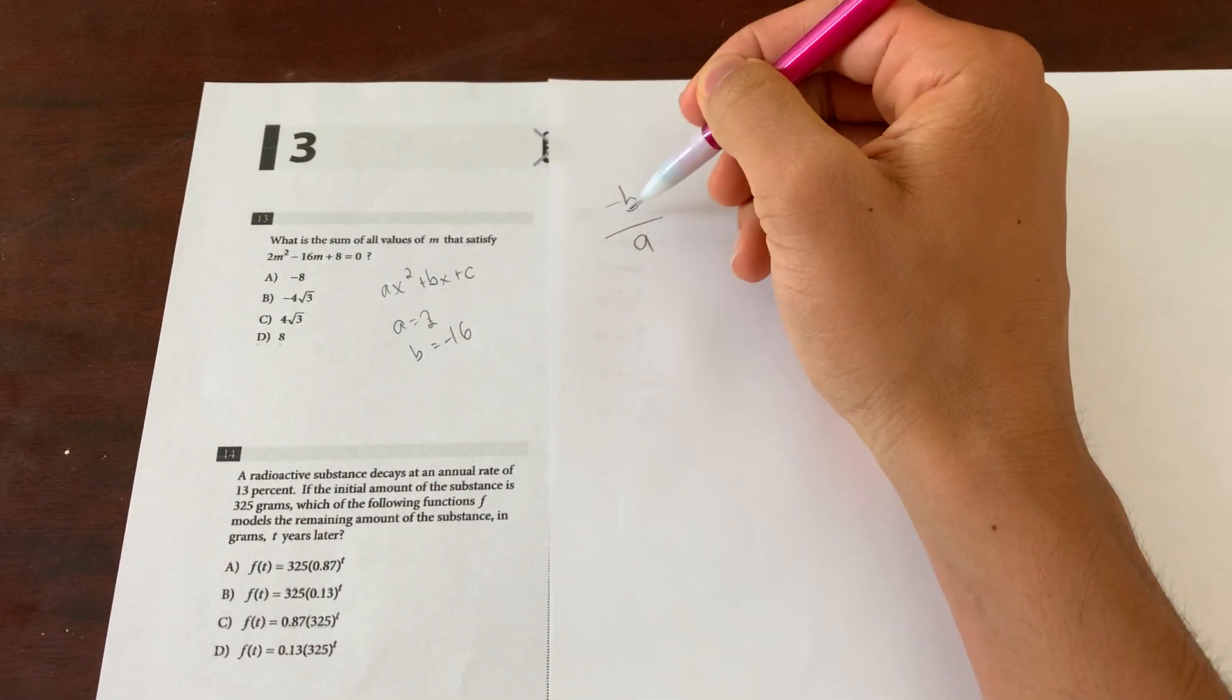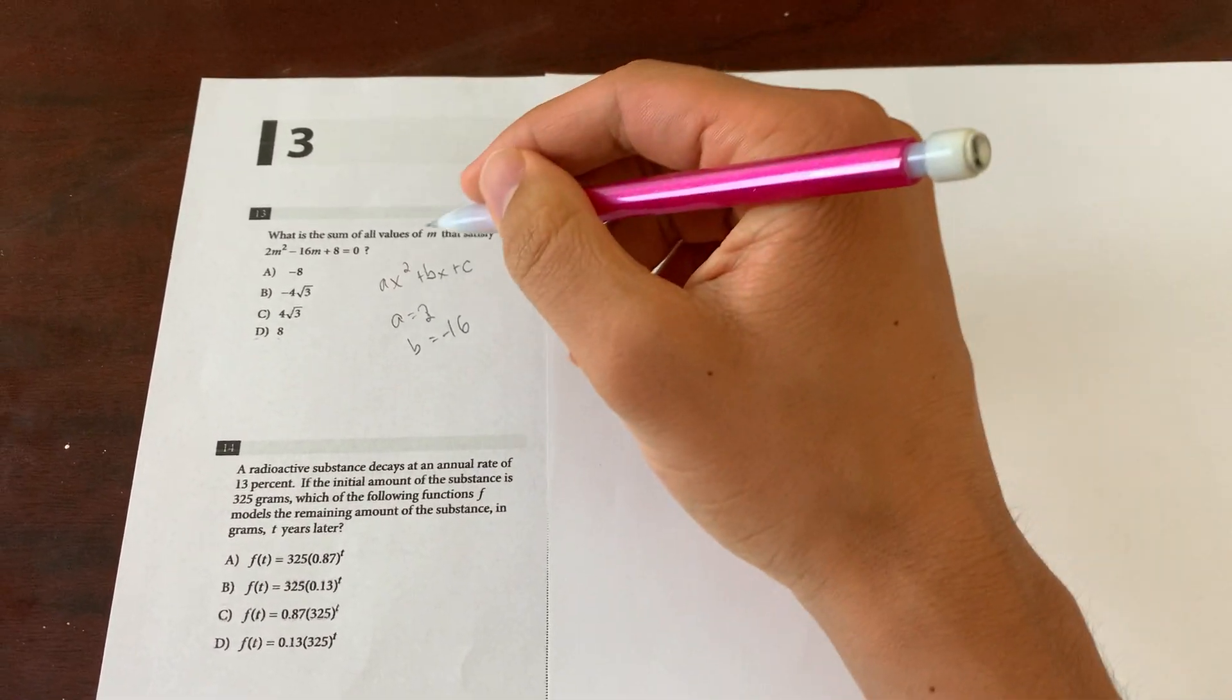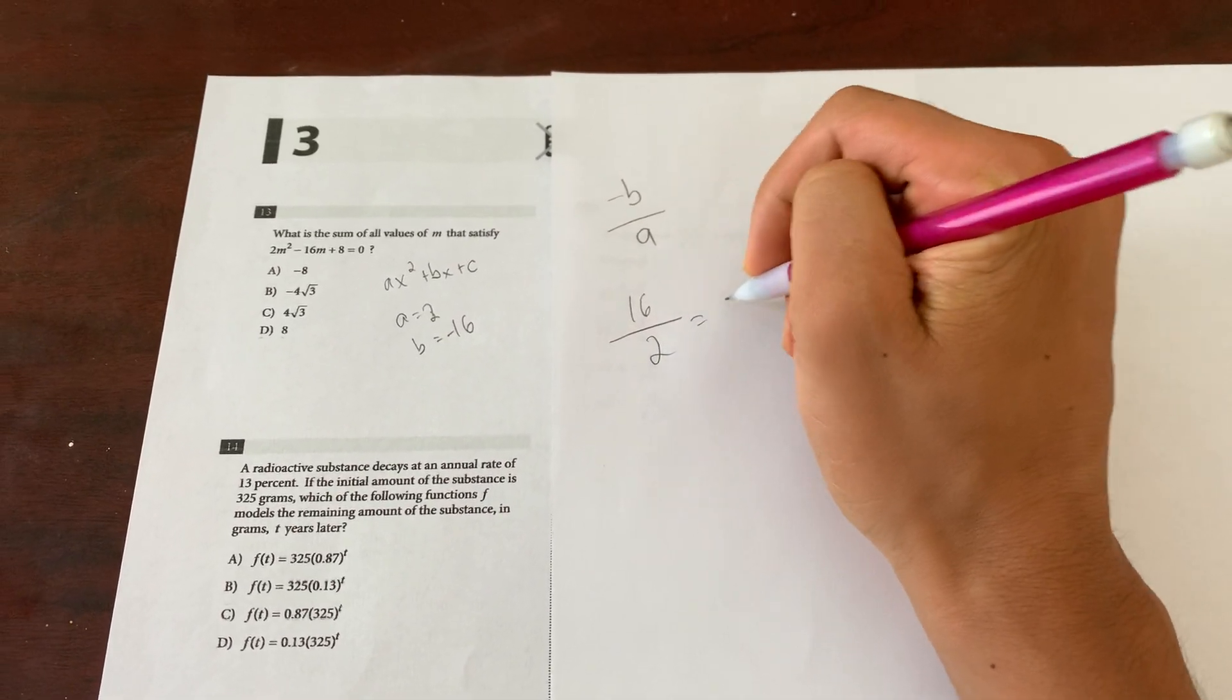So what is negative b in this case? Well, it would be negative negative 16, which is positive 16. And what is a? 2. 16 over 2 equals 8.